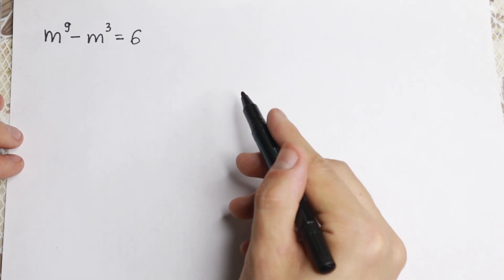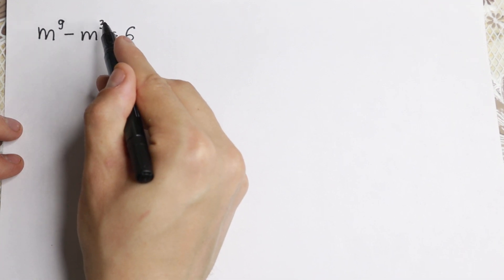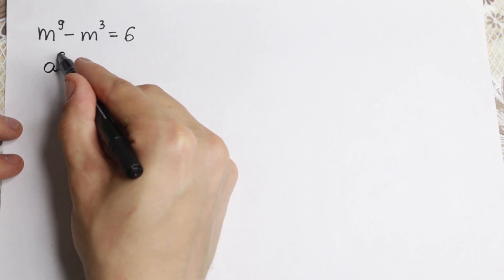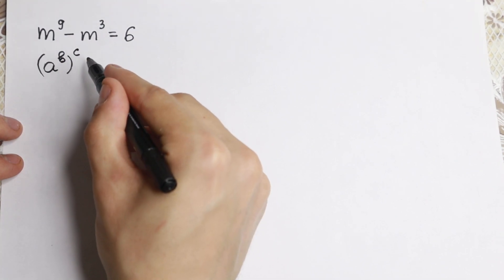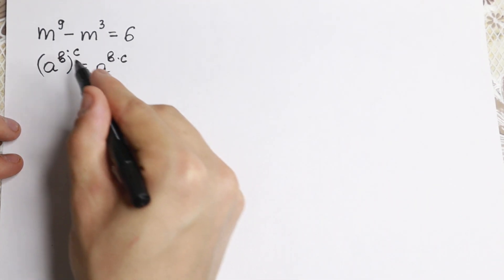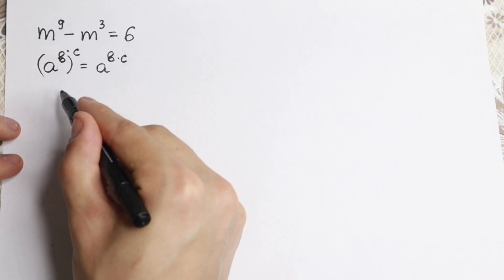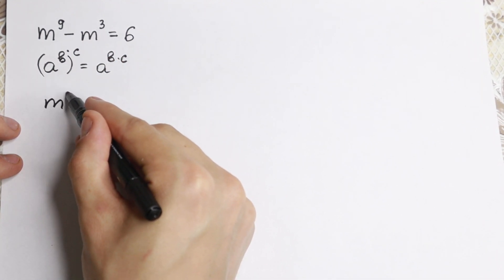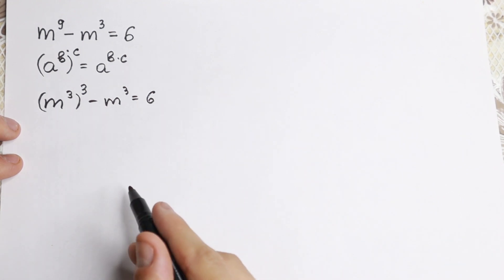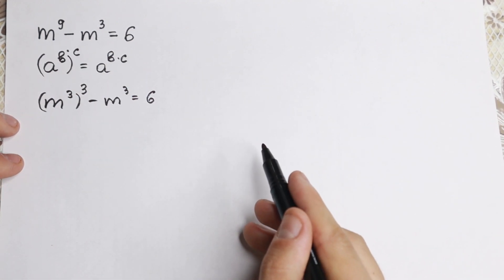First of all, we can take a closer look right here — we have m to the 9th power. That's really useful because 9 can be written as 3 squared, so we can easily rewrite it another way. The rule is: if we have a to the power b, raised to the power c, we can multiply the exponents to get a to the power b times c. So we write m to the 9th as (m³)³ minus m³ equals 6, and using that rule, 3 times 3 equals 9 — completely the same.